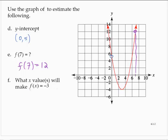What x values will make f of x negative 3? So there's negative 3. There are points that have an output of negative 3, and those occur when x is 2 and when x is 4.